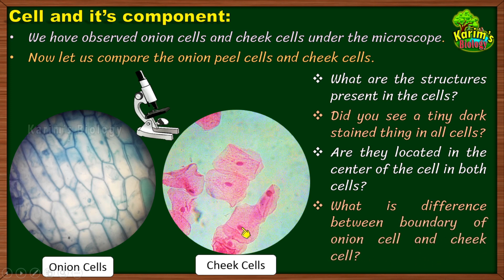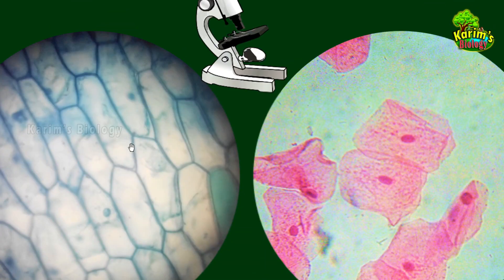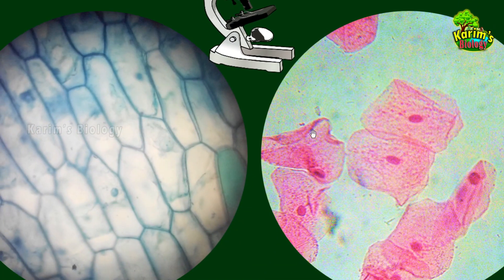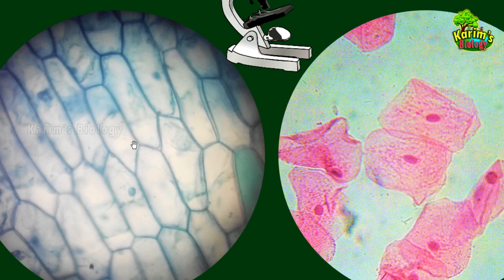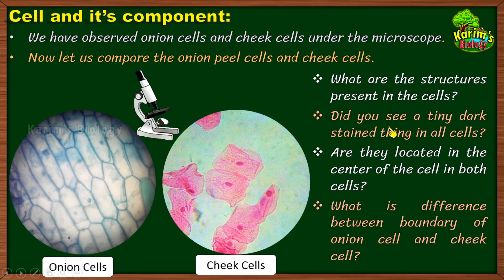One more question: what is the difference between the boundary of onion cells and cheek cells? This is the onion cell — let me zoom in. The boundary of the onion cell is very clearly visible and appears to be thick, whereas in cheek cells the boundary is not that clearly visible. Also, the surface of onion cells is smooth and they are roughly rectangular in shape, but in cheek cells the boundary is not smooth, affecting their shape. The cheek cells are not all the same shape — they vary.